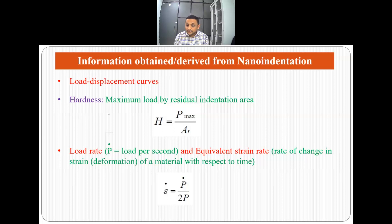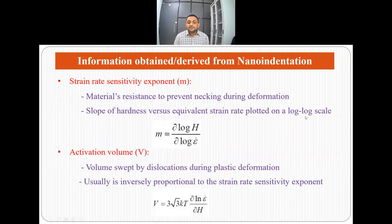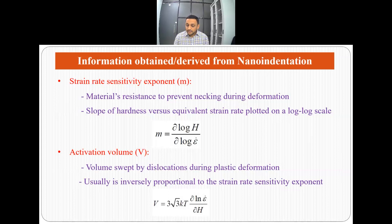The third thing we can calculate from nano-indentation is the loading rate and equivalent strain rate. Loading rate is load per second — how much load we are applying per second. Equivalent strain rate is the rate of change in strain or deformation of a material with respect to time, and it is given by loading rate divided by 2P. The fourth parameter is the strain rate sensitivity exponent — it is the material's resistance to prevent necking during deformation. Suppose a material is undergoing deformation: the resistance of that material to necking is what we mean by the strain rate sensitivity exponent, and it is given by the slope of hardness versus equivalent strain rate plotted on a log-log scale: m = ∂(log H) / ∂(log strain rate).